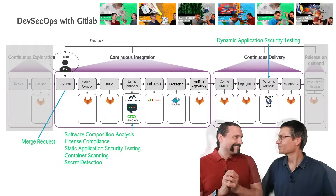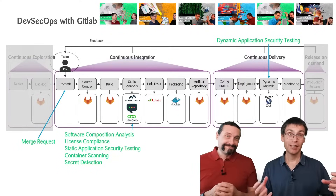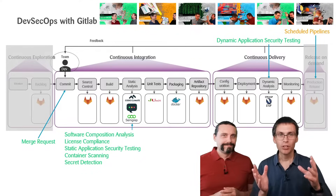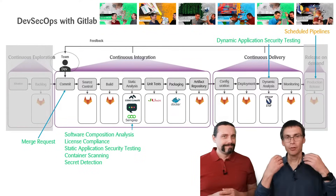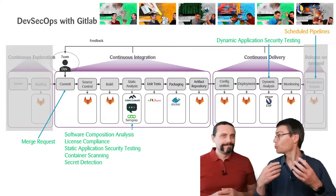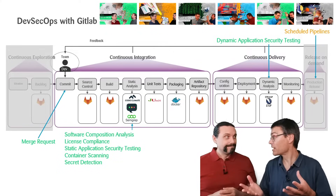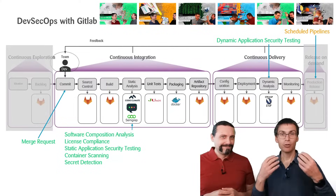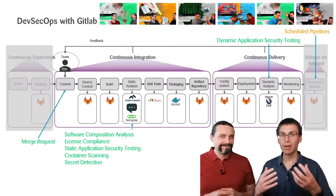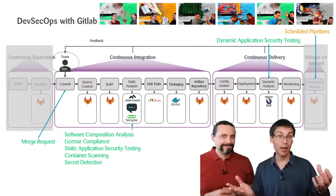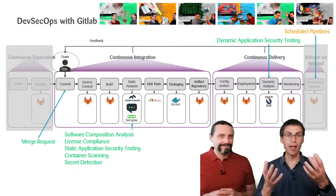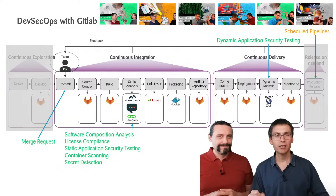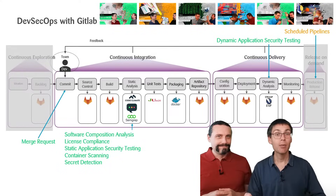Not really — there's one thing left. Imagine what happens if you have code in production, so your product is actually running there. Time passes and there are new vulnerabilities found in dependencies you have. You want to be aware of these changes, and for this we can introduce scheduled pipelines.